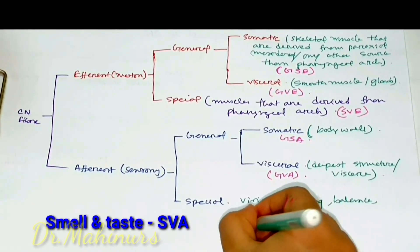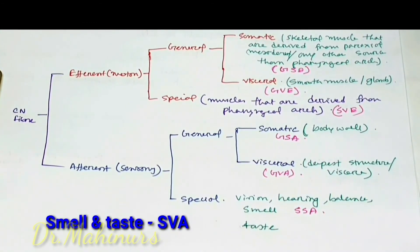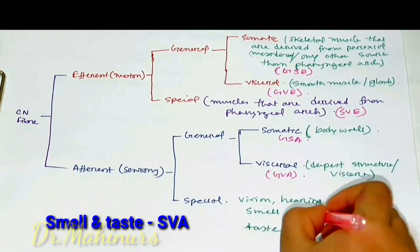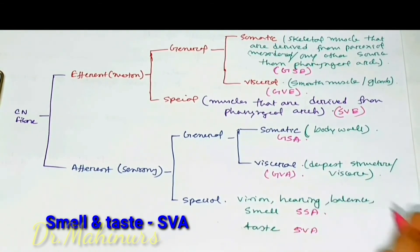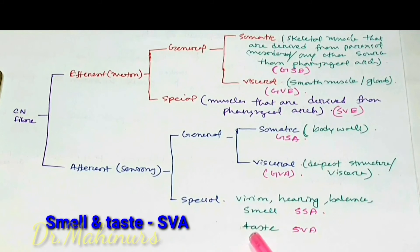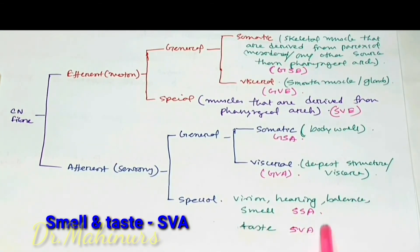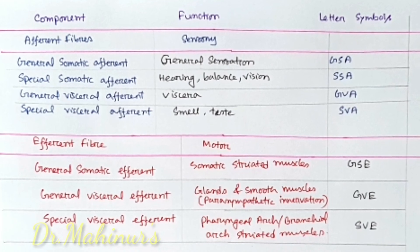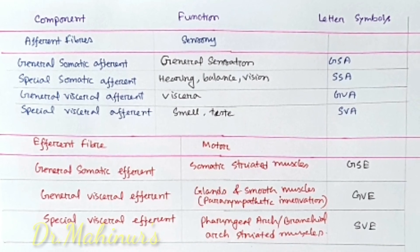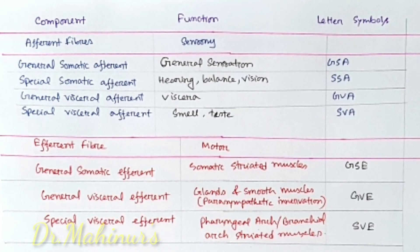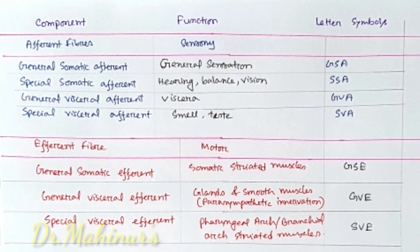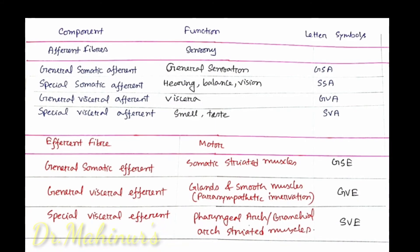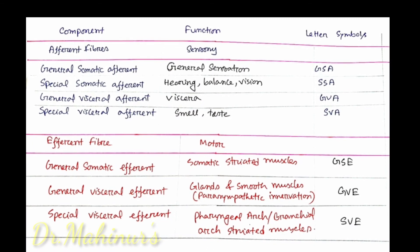This is the final chart where all functional components are summarized. For more detail, please watch the functional components of cranial nerve, part two. Thank you.